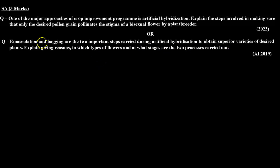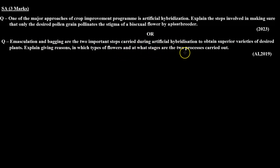In this question, emasculation and bagging are stated as the two steps of artificial hybridization. We have to explain in which type of flowers and at what stage of the flower each process is carried out. This question was asked in the All India Examination in 2019.